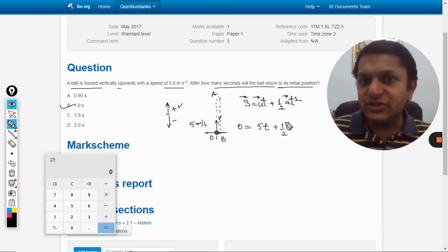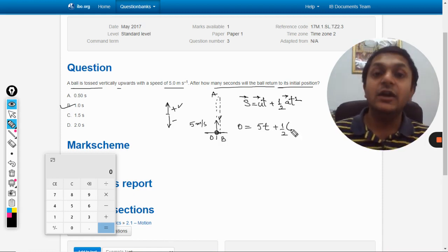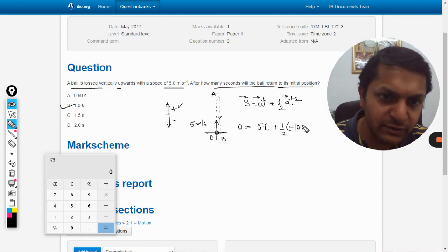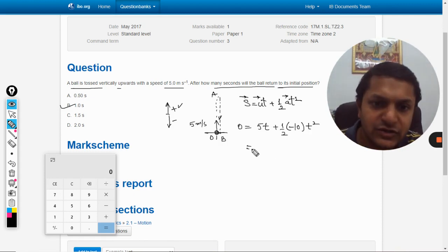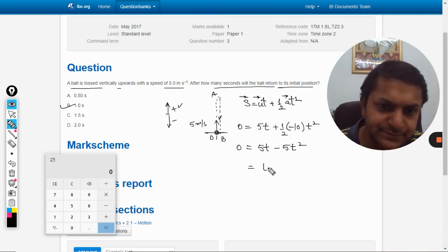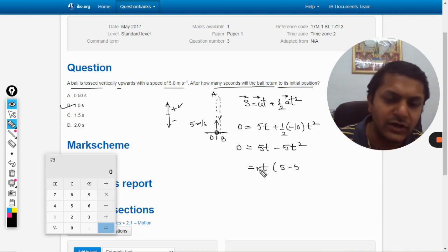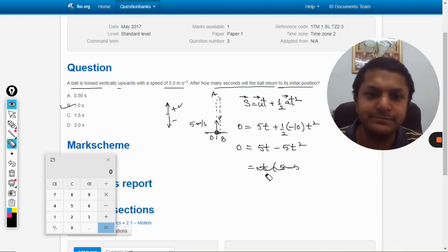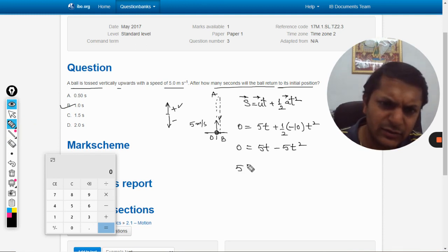We need to solve this: 5t minus 5t square equals 0. T will be taken out. 5t will be taken common, or I can do it like this.